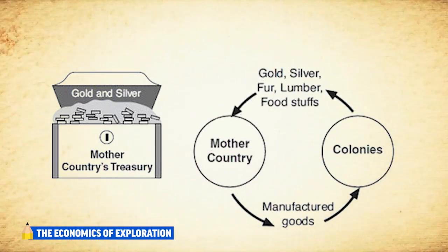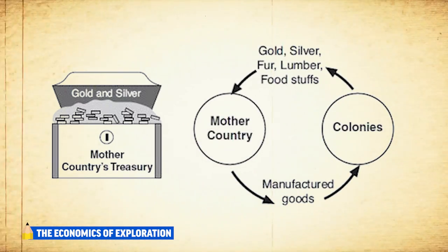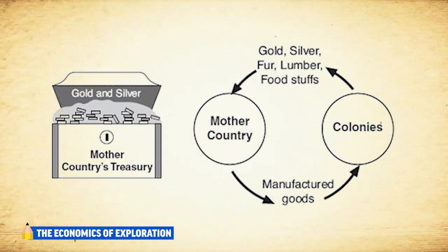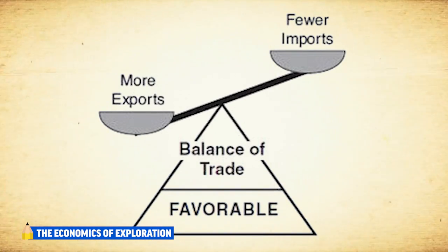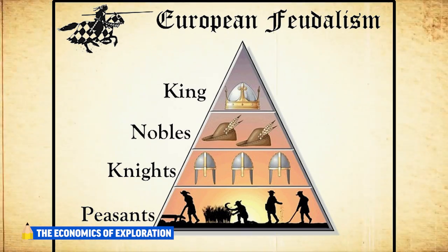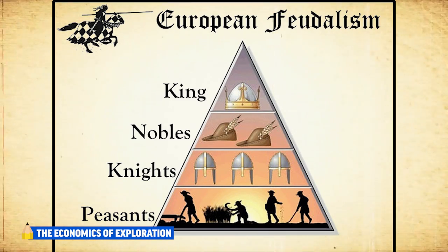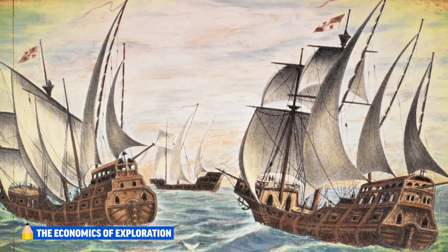Early European exploration eventually led to colonization driven by the economic theory of mercantilism, which stated that countries gained power by accumulating the most gold and silver. Colonies were established to find precious metals or access raw materials and cash crops to increase national wealth, with the goal of maintaining a favorable balance of trade — exporting more than importing. New food sources and resources from the New World caused a population boom and wealth increase in Europe, leading to a shift from the medieval feudal system, which measured wealth in land and titles, to capitalism, focused on expanding markets and free trade.